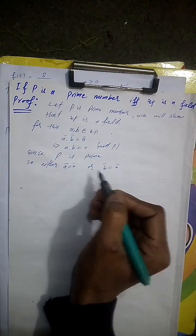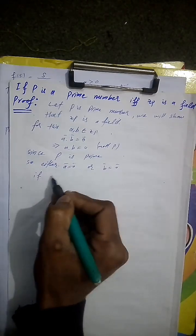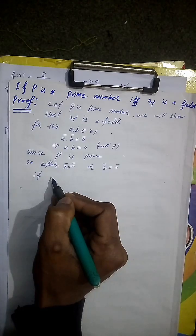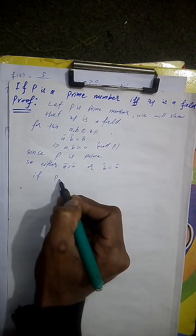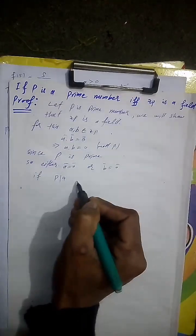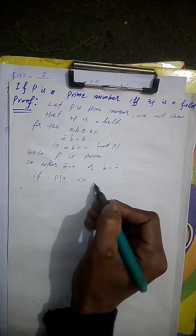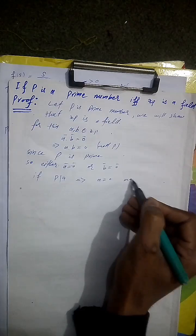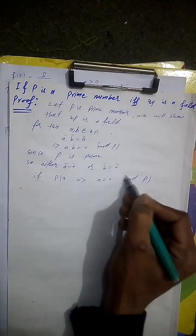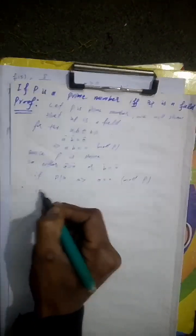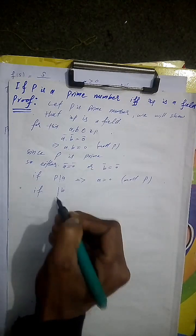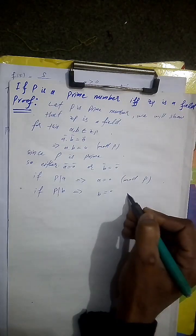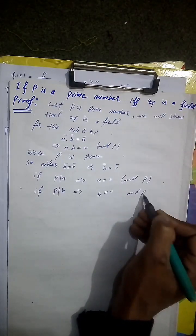If a equal to zero mod p, if b equal to zero under mod p.